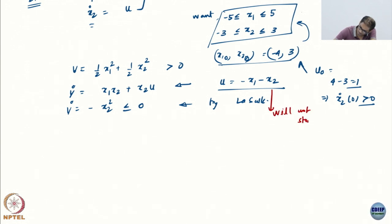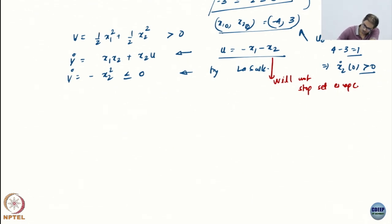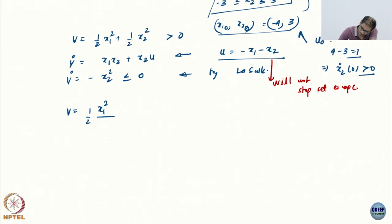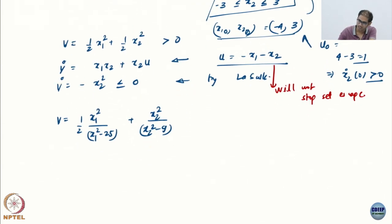This will not stop set escape, as is obvious because we did nothing to actually help stop it. So what I will do is modify V now. I will use V = x1²/(25 - x1²) + x2²/(9 - x2²). This is what is called a reciprocal barrier function — we have done some reciprocal construction.